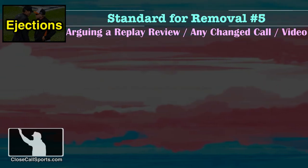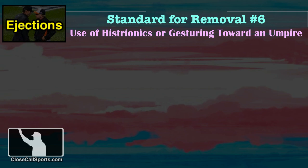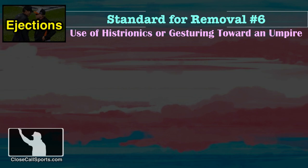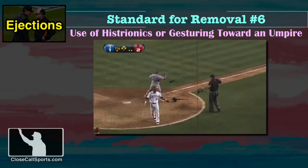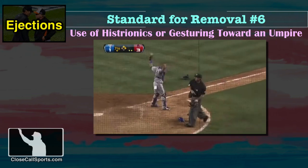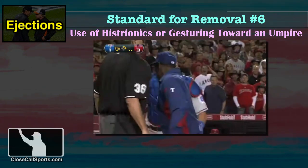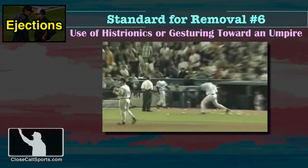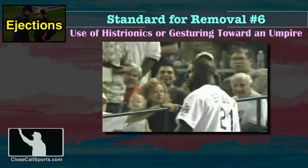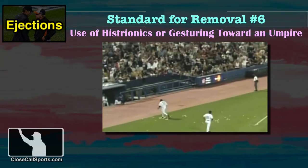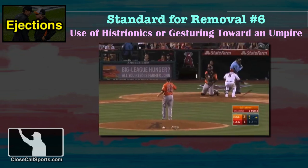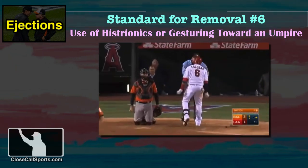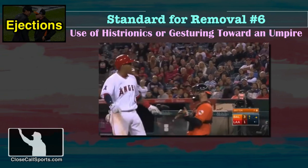The sixth standard for removal is use of histrionics or gesturing towards an umpire. This provision also includes an ejection for throwing something out of a dugout. Play at the plate — he is safe. And Troy Alba is thrown out of the game, and here comes Ron Washington. Ranley picked up the ball bag and began to throw baseballs all over the field. That's a called strike three on a pitch that was nowhere near the zone. Escobar is chapped, and he should be.